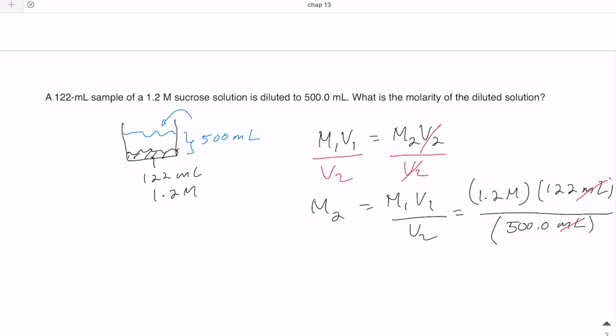When you do the calculation, you should get 0.293 molar, which makes sense. That's a smaller concentration than your starting value of 1.2 molar.